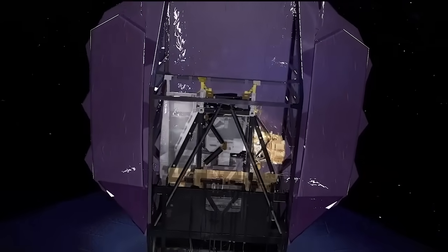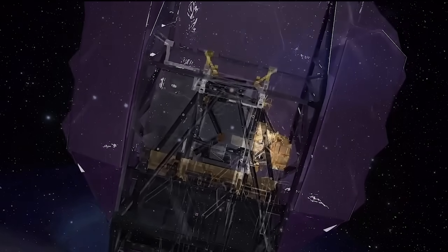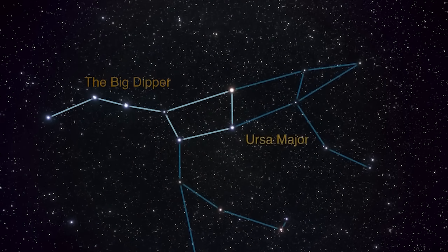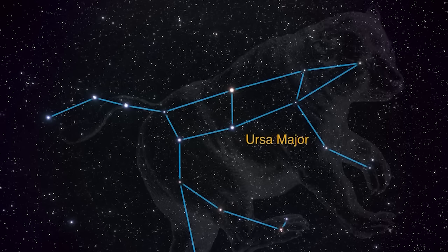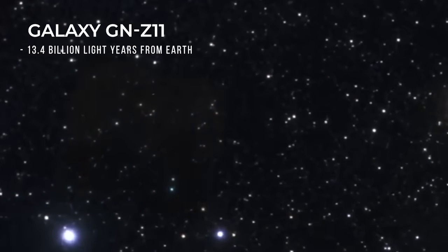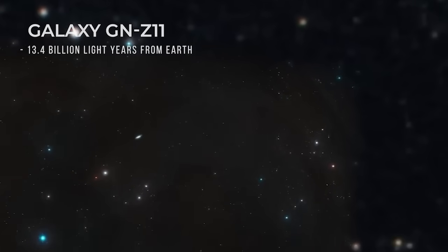On March 3, 2016, a Hubble image was released that discerns the galaxy GN-Z11, located 13.4 billion light-years from Earth, the most distant galaxy ever observed.